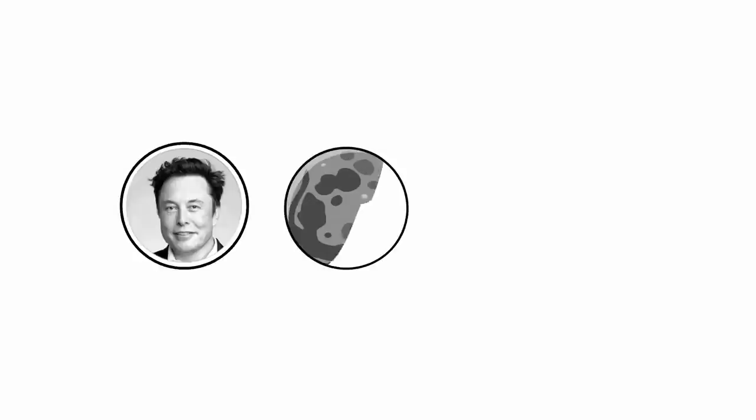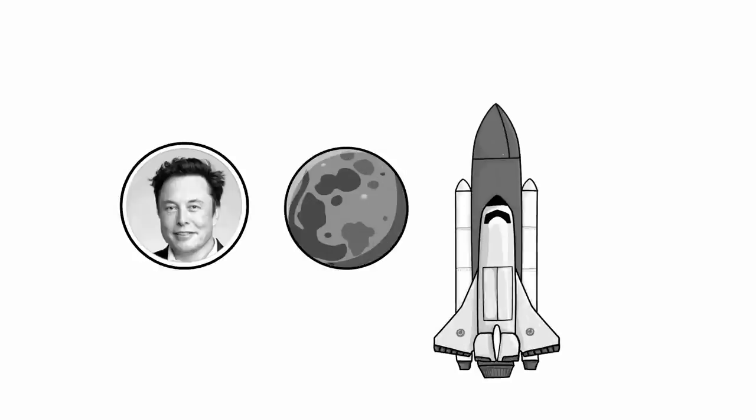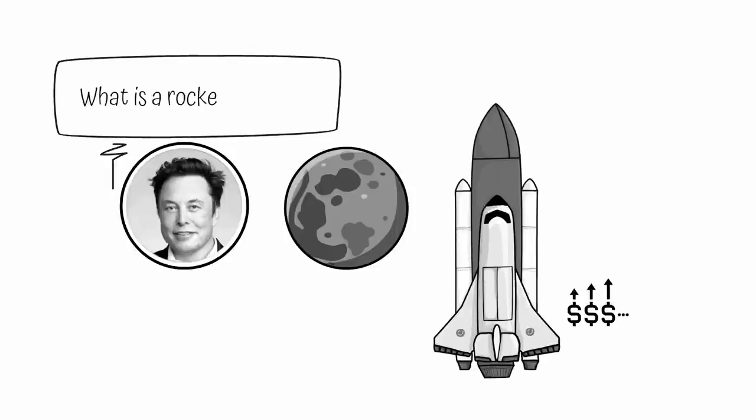The F in what-ifs stands for first principles thinking. Elon Musk had a problem. He wanted to go to Mars, but acquiring a rocket to get to Mars was simply too expensive. So Musk asked himself, what is a rocket made of?